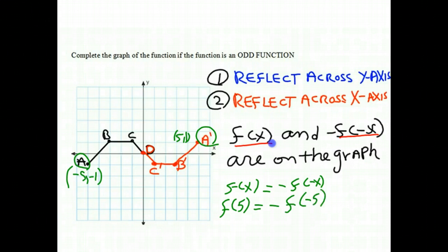Well, f of 5, if we go back and look at our A prime, gives us a value of 1. When x is 5, y is 1, so there's a 1 on this side. f of negative 5 on the other side, if we look over here, you'll notice that f of negative 5 gives us a y value of negative 1. So f of negative 5 is negative 1.